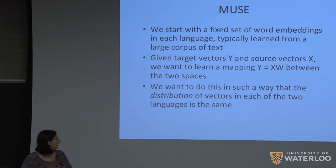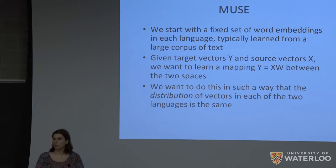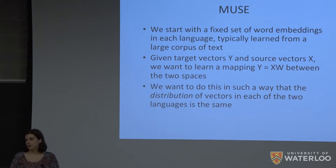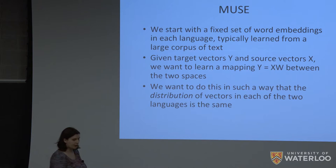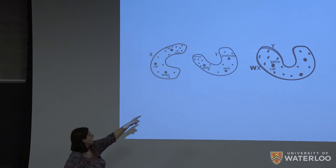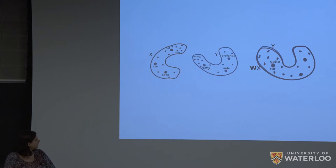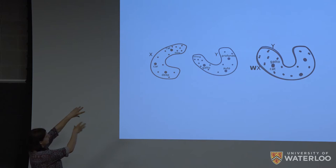We want to learn some matrix W that translates between these embedding spaces — formally, by taking many vectors from the English space, transforming them with W, and making that distribution match the actual French vector distribution. A diagram from their paper illustrates this: imagine the space of English words and the space of Italian words both forming a similar U-shape structure. We're trying to find a transformation to apply to space X to make it coincident with space Y. By doing this, we achieve translations.